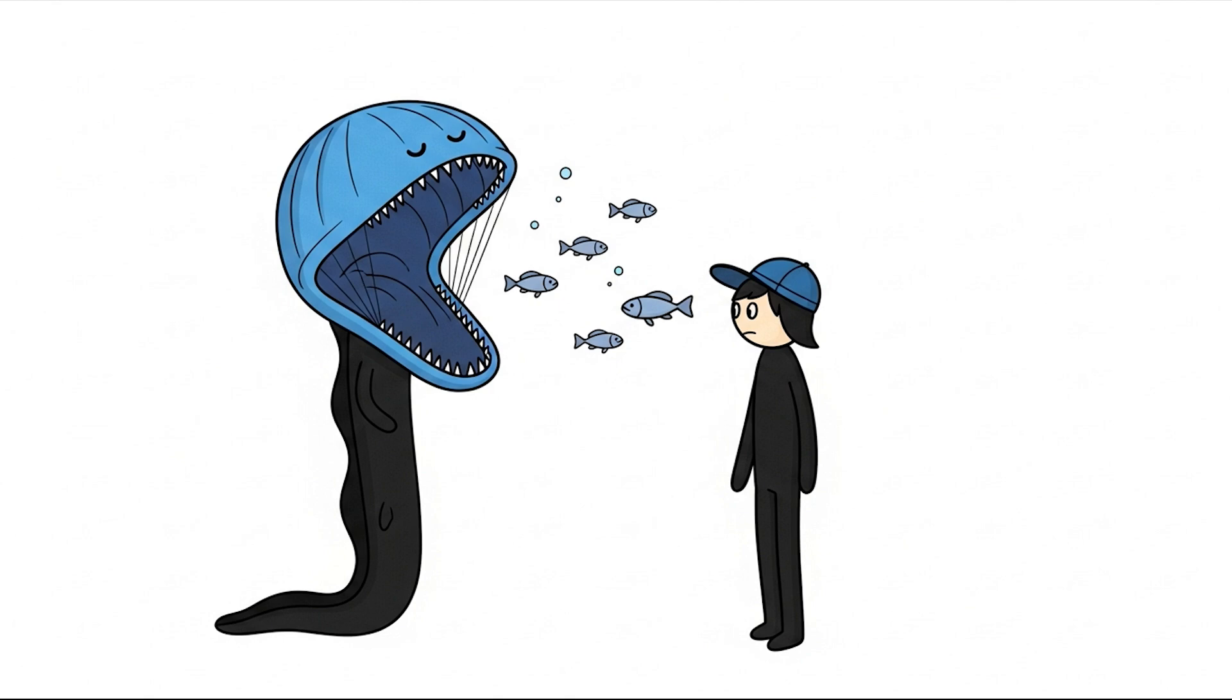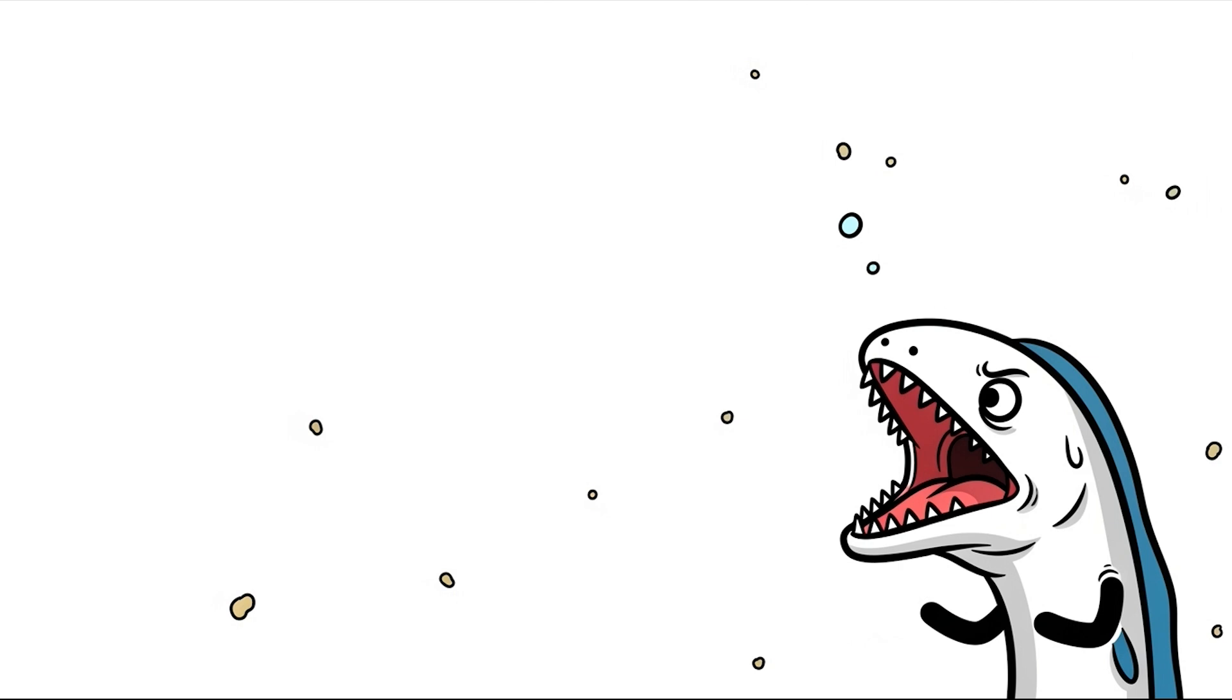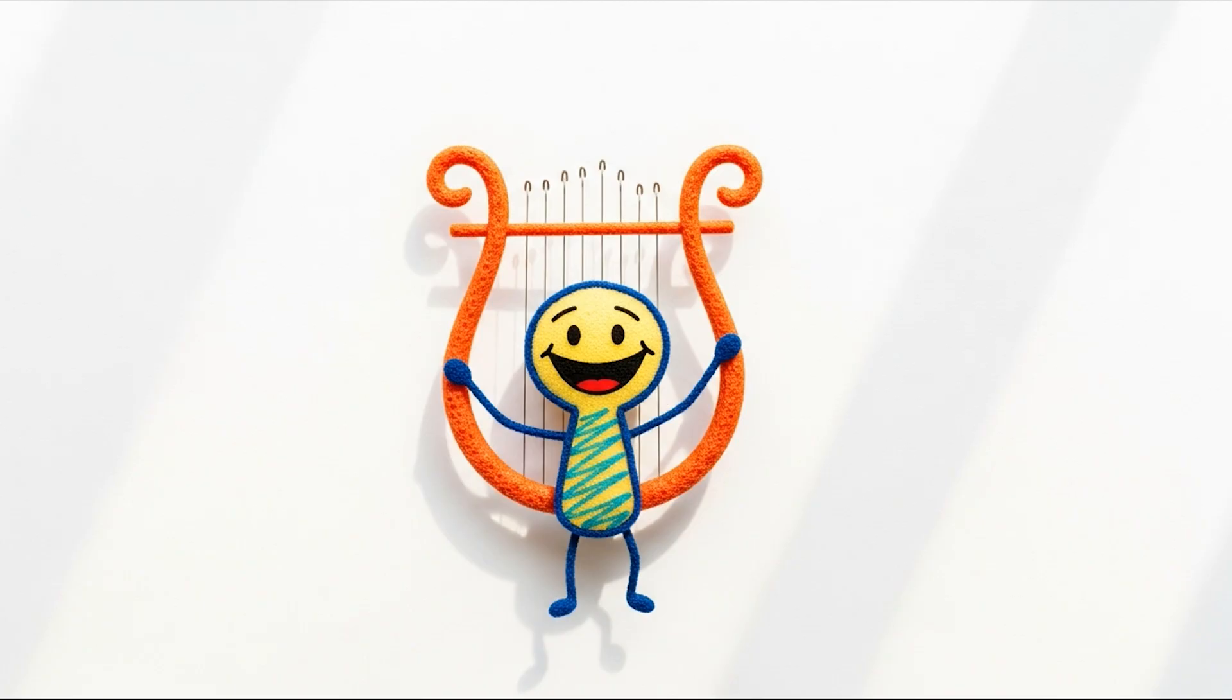They don't expend energy chasing prey like other predators, instead, they simply float with their mouth wide open, waiting for something to bump into them. In the deep ocean, where food is incredibly rare, you simply can't afford to waste energy being picky.